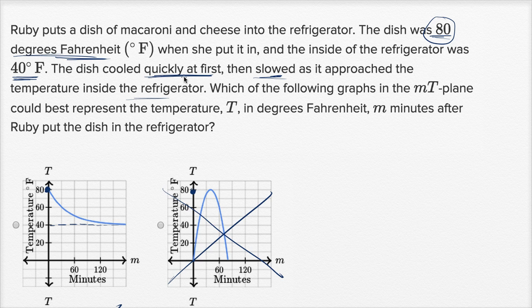The dish cooled quickly at first, so that would be a steep decline, then slowed as it approached the temperature inside the refrigerator. So the decline slows, it becomes less negative as we approach the temperature of the refrigerator.